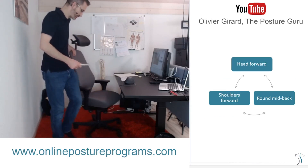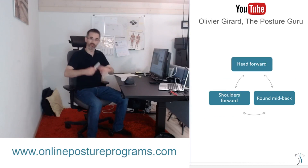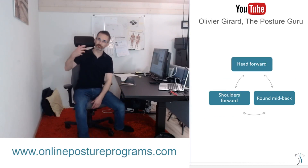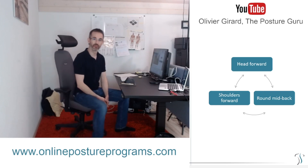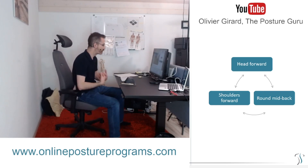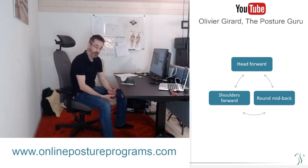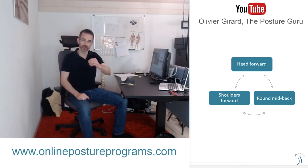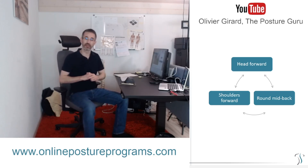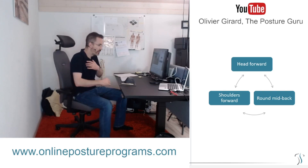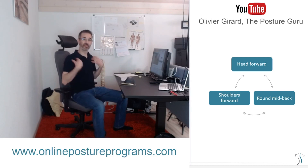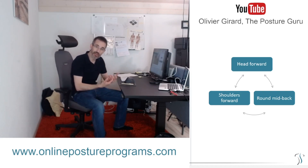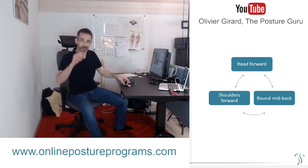Forward head posture is the consequence of other problems. There's a vicious cycle in your upper body: when your mid-back goes round, your shoulders go forward or round, and your head moves forward. Each one of these three is both the cause and the consequence of the other two. You just need one of the three and you automatically get the other two.